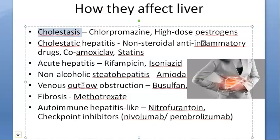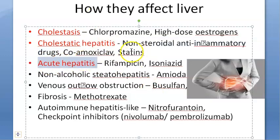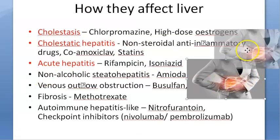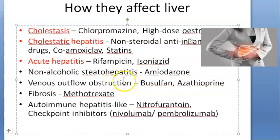How do they affect the liver exactly? Some of them cause cholestasis — chlorpromazine and high-dose estrogen cause cholestatic hepatitis, where both the bile and liver are affected. NSAIDs, amoxicillin, and statins cause hepatitis — inflammation of the liver. Rifampicin and isoniazid cause acute hepatitis. Amiodarone, the anti-arrhythmic, leads to non-alcoholic steatohepatitis — fatty liver. Busulfan and azathioprine cause venous outflow obstruction, blocking blood flow toward the inferior vena cava.